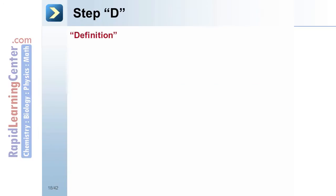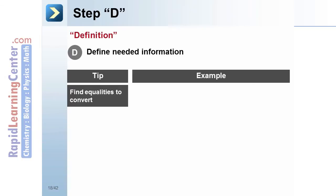Step D, definition. Define needed information, tools to help solve the problem. For example, we may need to convert units. Velocity might be converted from kilometers per hour to meters per second.